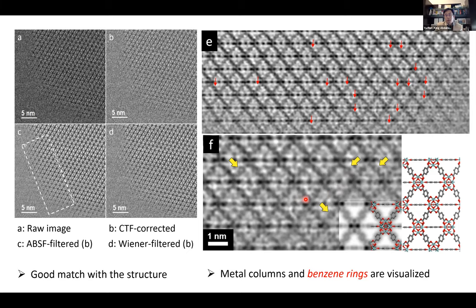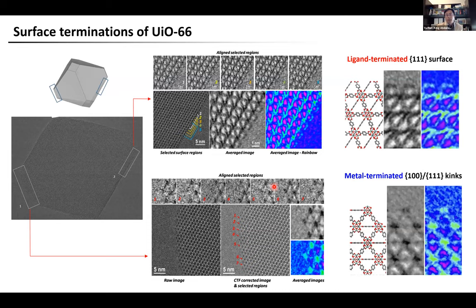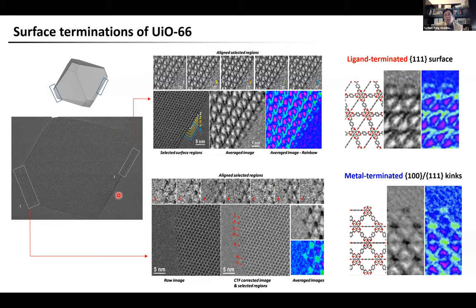This result confirms that the crystal structure of UiO-66 is very well preserved under the ultra-low-dose condition used. After confirming safe imaging conditions from the bulk structure, we moved on to study the local structures. We observed that the surface termination of UiO-66 is facet-dependent. On the major 1,1,1 surface, we found the surface is terminated by organic linkers. On the truncated surface consisting of 1,0,0 and 1,1,1 kink positions, it is terminated by metal clusters. So two different surface termination modes coexist in a single crystal.